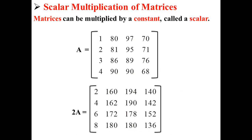Now, here we have our original matrix A and our new matrix 2A, where every element has been multiplied by 2. We have performed scalar multiplication on our original matrix.